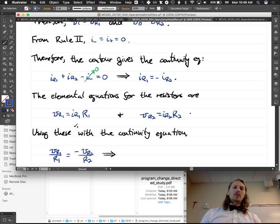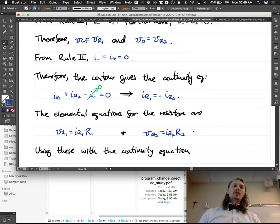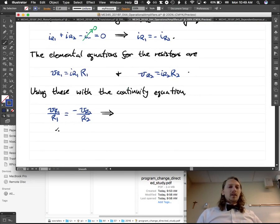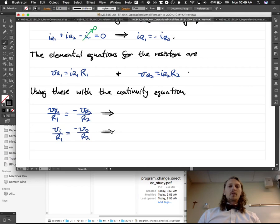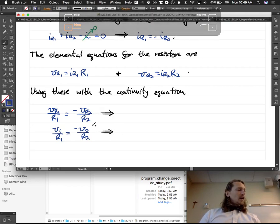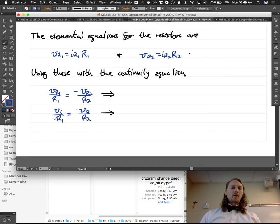Furthermore, V_R1, from up here, we said was equal to V in. V_R2 is equal to V out. So, we have V in over R1 equals negative V out over R2. Which, solving for the ratio of output over input, which is what we wanted to find in this problem, V out over V in, is equal to negative R2 over R1.